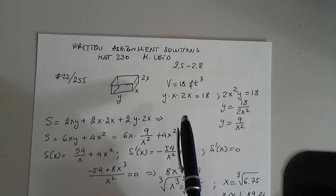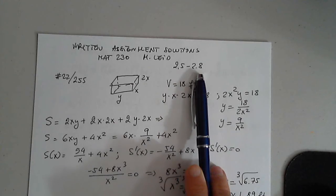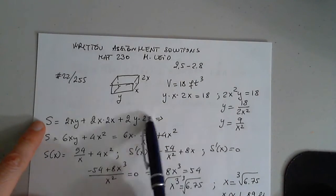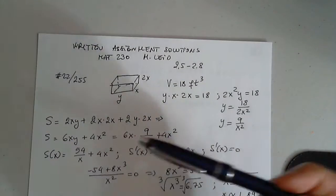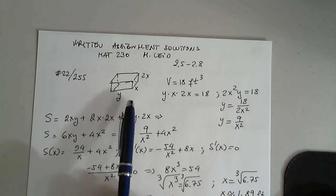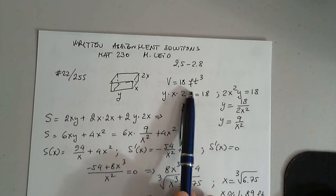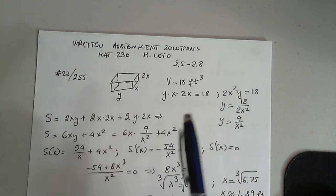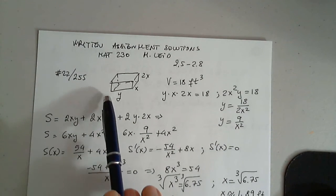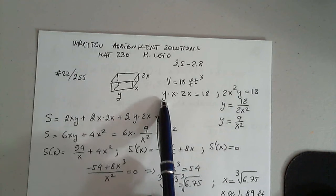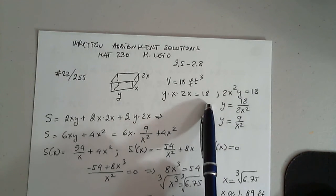Okay, so these are homework solutions for sections 2.5 through 2.8. This was a box with a height that is double the width and the length. And we were given that the volume was 18 cubic feet. So the volume of a box like this is length times width times height, which is 18.